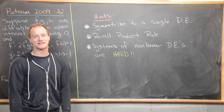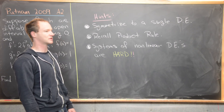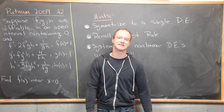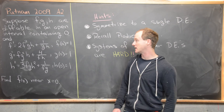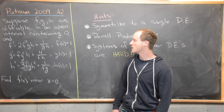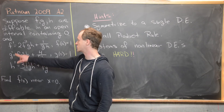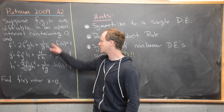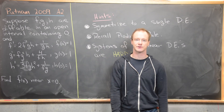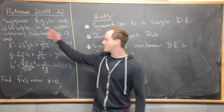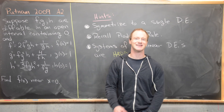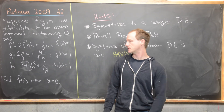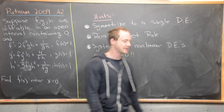The first hint is to symmetrize this into a single differential equation. There are clues built into the problem: these coefficients 2 plus 1 plus 3 equal 6, and these coefficients 1 plus 4 plus 1 also equal 6. So if we manipulate these differential equations and take a sum, we can get two things that have a coefficient of 6.